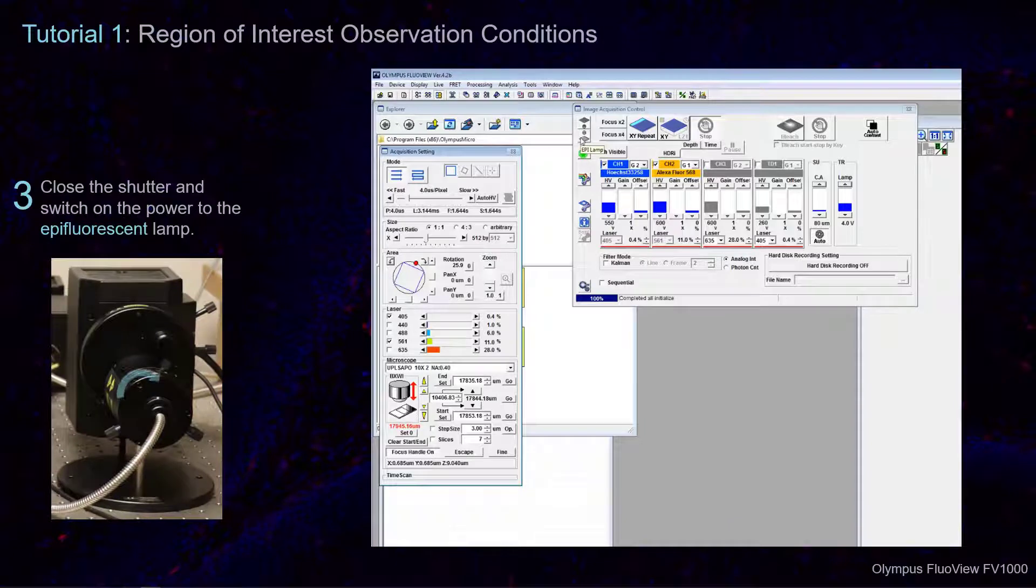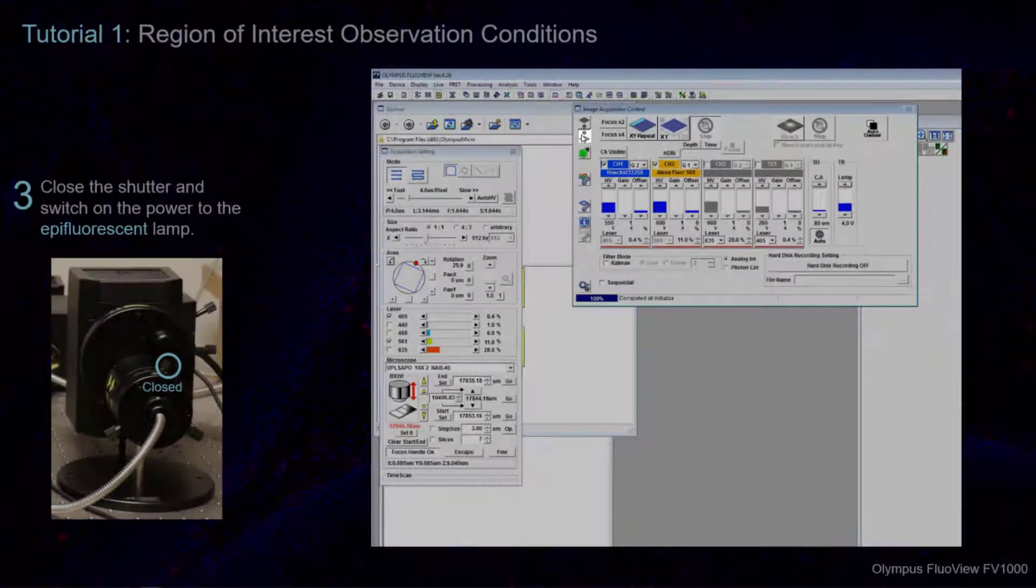Check that the epifluorescence shutter is all the way to the right in the closed position, then switch the power on in the Image Acquisition Control window.